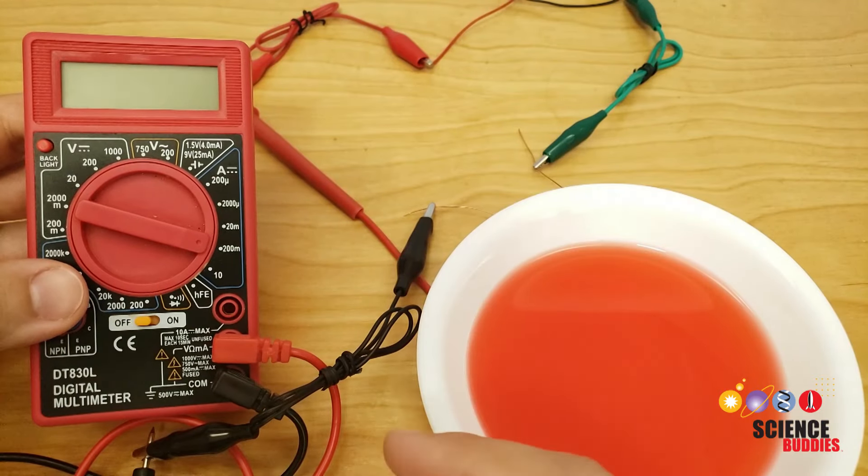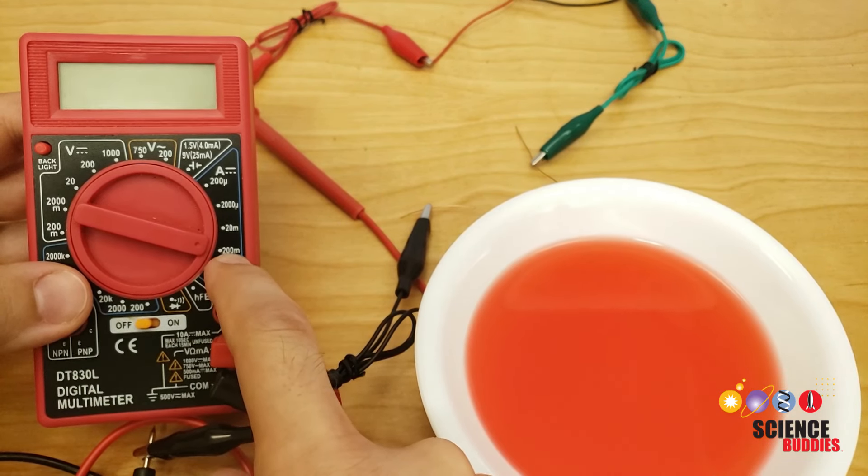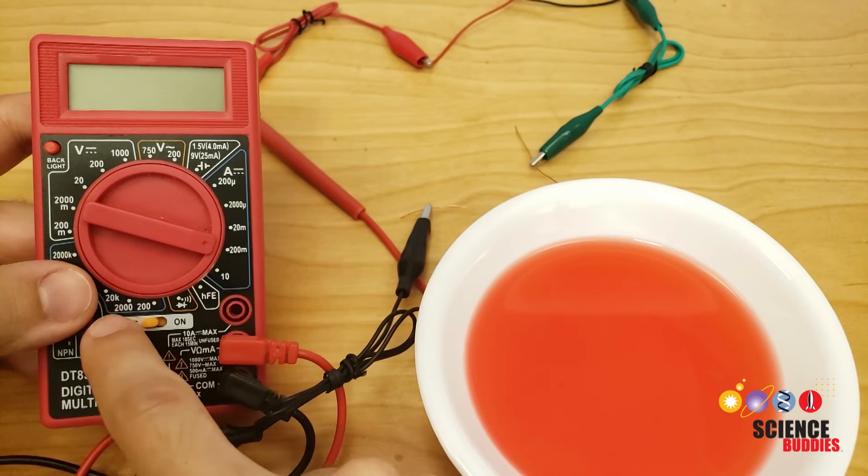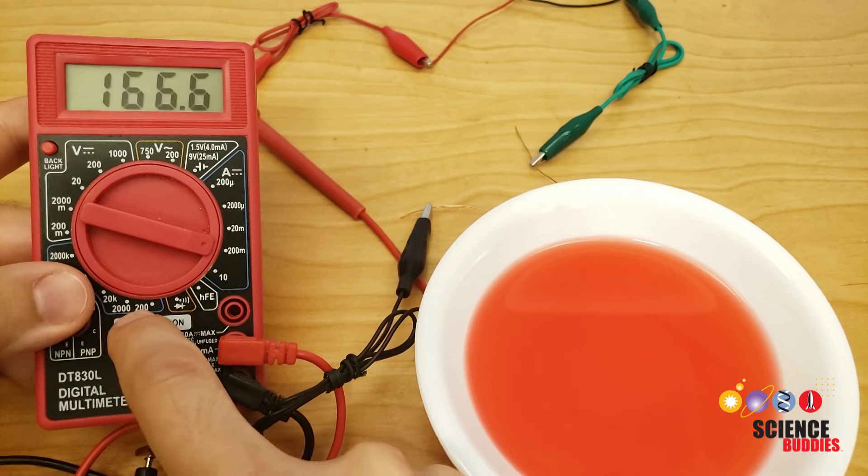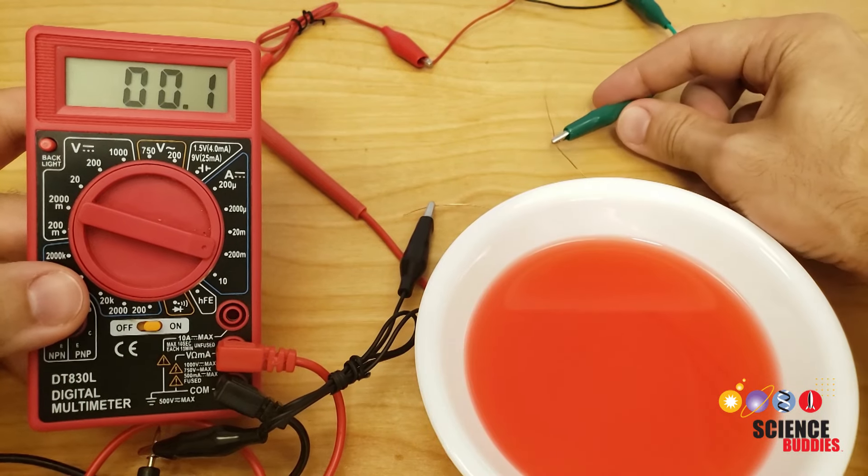Once you have the circuit set up, you will want to change the dial on the multimeter to the 200 milliamp range. This means it will measure currents up to 200 milliamps and switch the multimeter on. Now the current should read zero if the conductivity sensor has not been placed in any liquid yet.